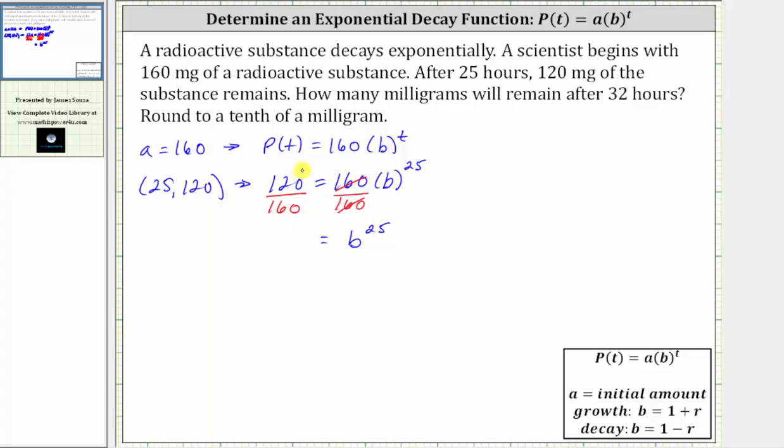On the left, 120 over 160 simplifies to 3 fourths. The greatest common factor between 120 and 160 is 40. There are three forties in 120 and four forties in 160.